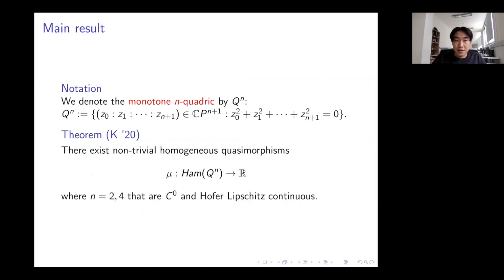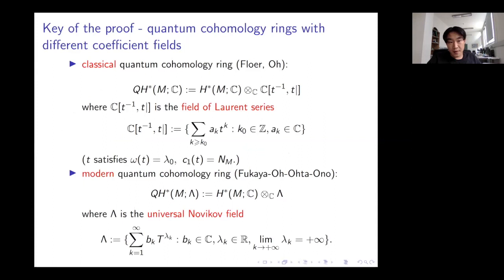The main result provides such examples for the two-quadric Q₂ and the four-quadric Q₄: there exist non-trivial homogeneous quasimorphisms on Ham(Q₂) and Ham(Q₄) that are both C⁰-continuous and Hofer-Lipschitz continuous.